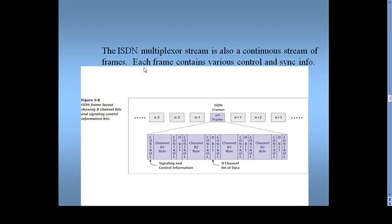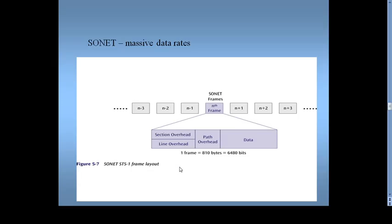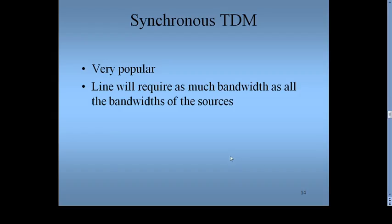The ISDN multiplexer stream is also a continuous stream. Each frame contains various control and synchronization information — control channel bits for signaling and control information. SONET handles massive data. The SONET frame structure includes: section overhead, line overhead, path overhead, and data. One SONET frame consists of 810 bytes, equal to 6480 bits. Advantages of synchronous TDM: it is very popular, and the line requires as much bandwidth as the combined bandwidths of all sources.